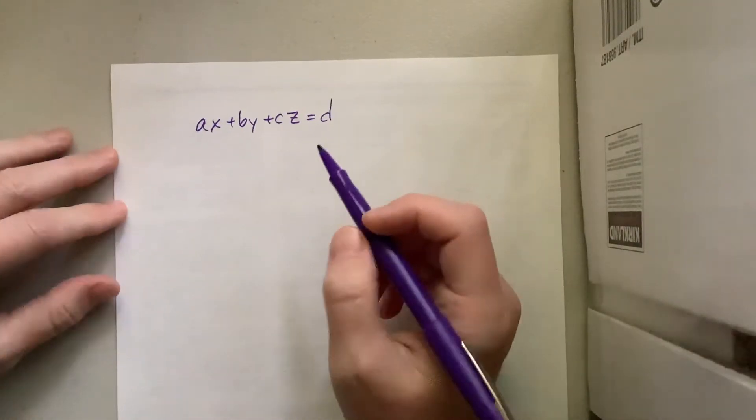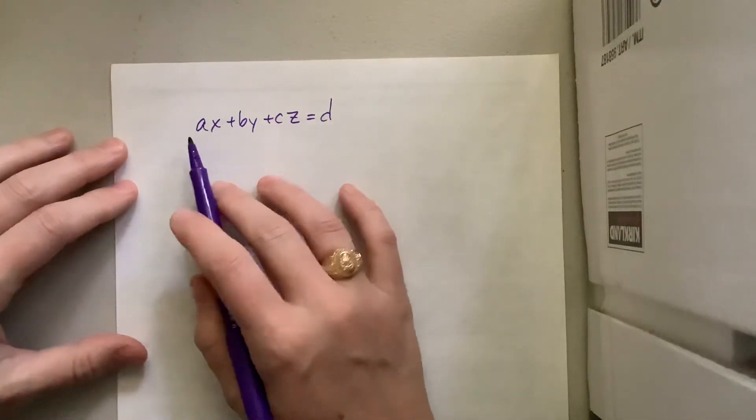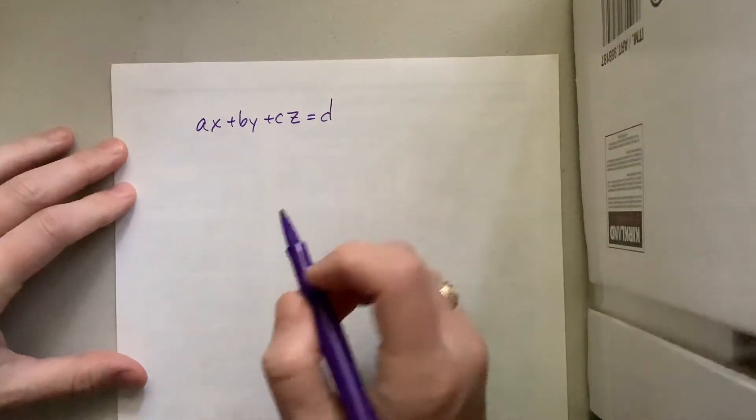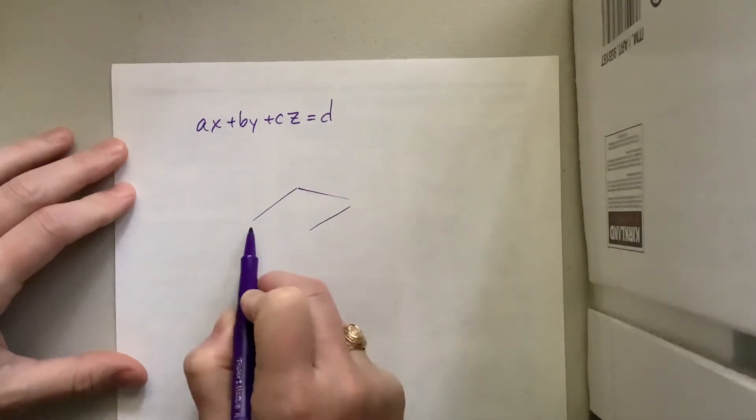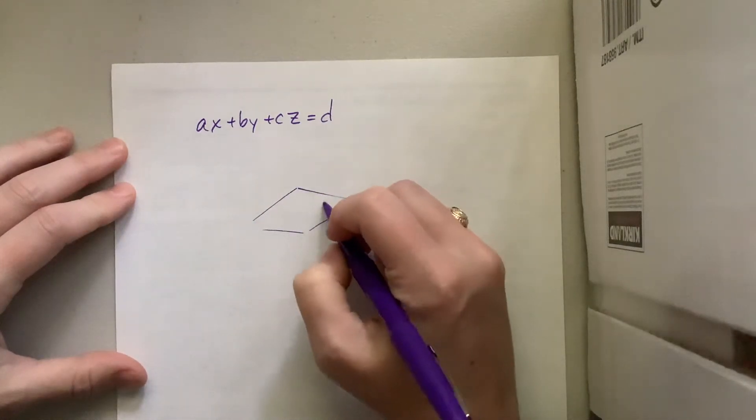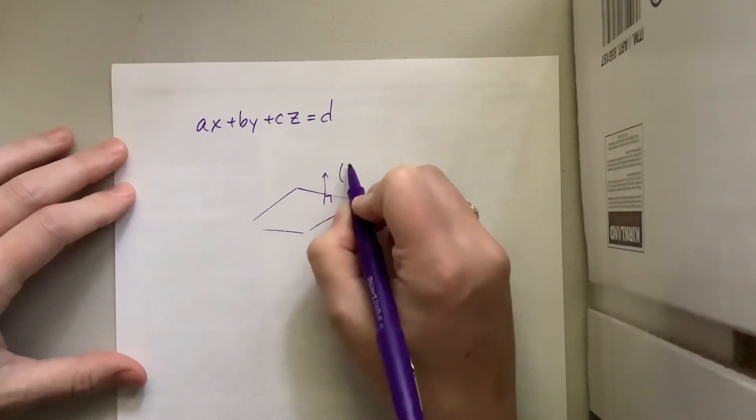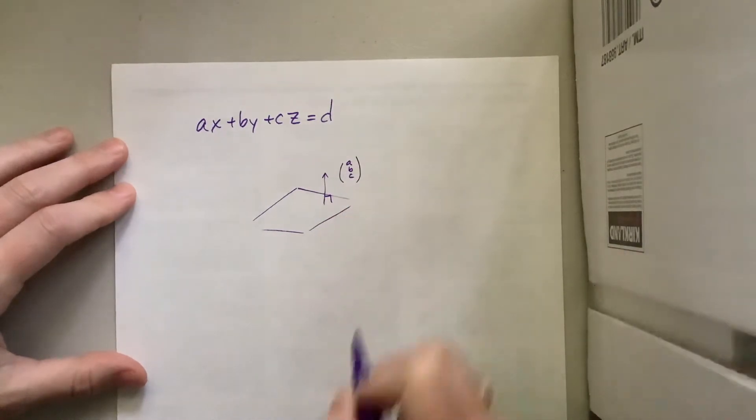Well, good question. First of all, ABC represents the normal vector. So what you've got here is you've got a plane and then you've got a vector that is perpendicular to the plane and this is that vector ABC.